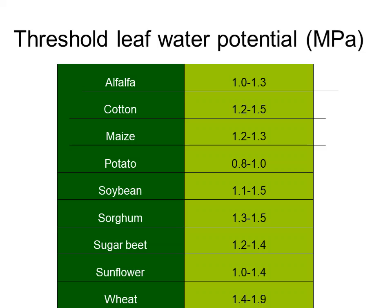In this table you see the threshold levels of leaf water potential for different species marking the start of stomatal closure. In general, the values to produce stomatal closure are around 10 to 15 bars, with some cases lower, but always less than 20 bars — less than 2 MPa of leaf water potential.